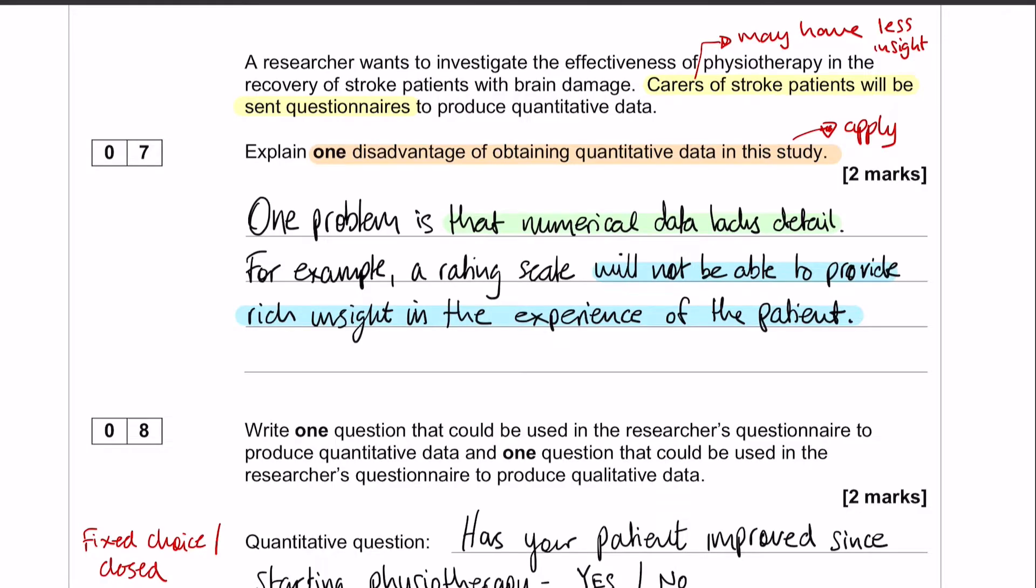Okay, obviously a rating scale is only one way in which you can gather quantitative data, so there are other examples that you can give. There's also completely different answers that you can give as well, but the point here is that you're not going to be able to get the same level of detail with numerical data as you will with descriptive data. Okay, so that's question number 7.